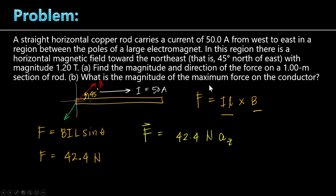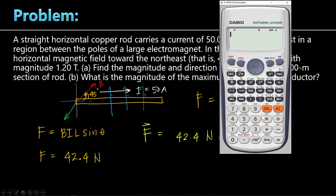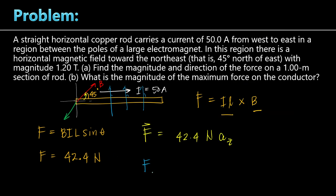Part B: what is the magnitude of the maximum force on the conductor? The force is maximum when the magnetic field is perpendicular to the conductor, because that makes sine theta equal to 1 — which happens when theta equals 90 degrees. In that case, F max equals BIL, which is 1.2 times 50 times 1 equals 60 Newtons.